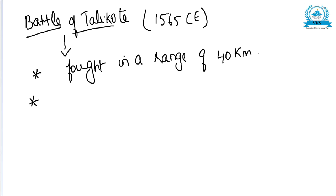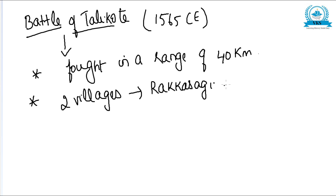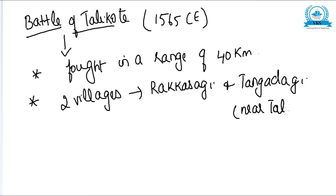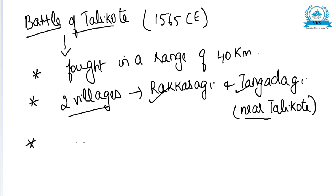The battle was fought between two villages — Rakkasagi and Tangadagi. These two villages were near to Talikote, and since the battle was fought between these two villages near Talikote, it was named the Battle of Talikote.